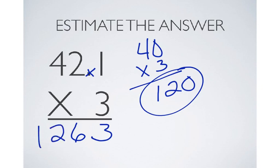Now, I decide where to put the decimal point based on the estimate that I have right here. I need my answer to be as close to 120 as possible. And the only way to get that is to put the decimal point right here. 126.3.